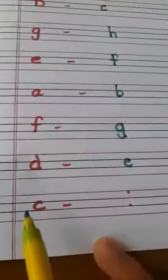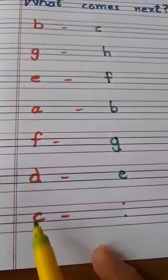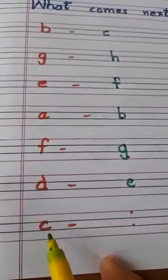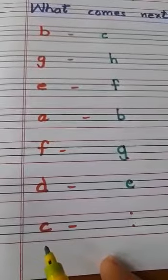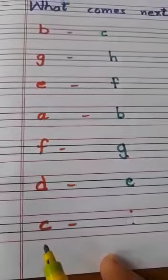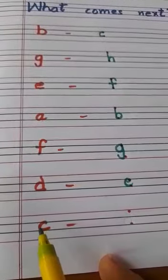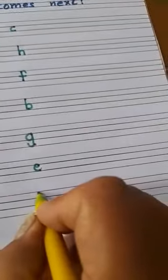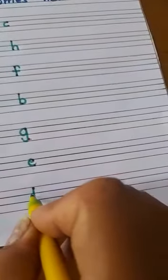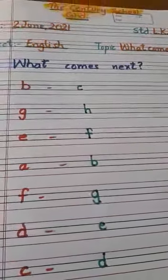Next is C. This is small letter C. What comes after small C? We will speak: A, B, C, D. After C, we will write here — D. This is small letter D.